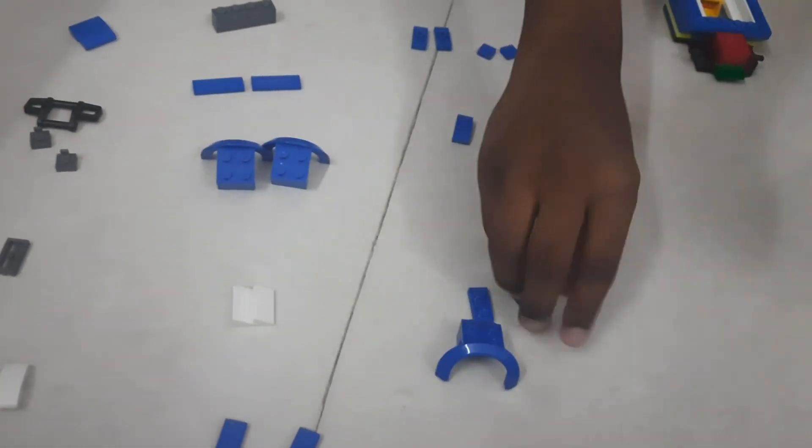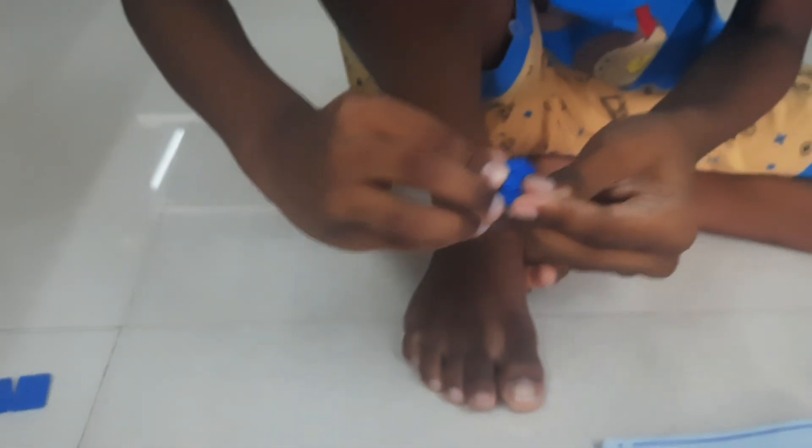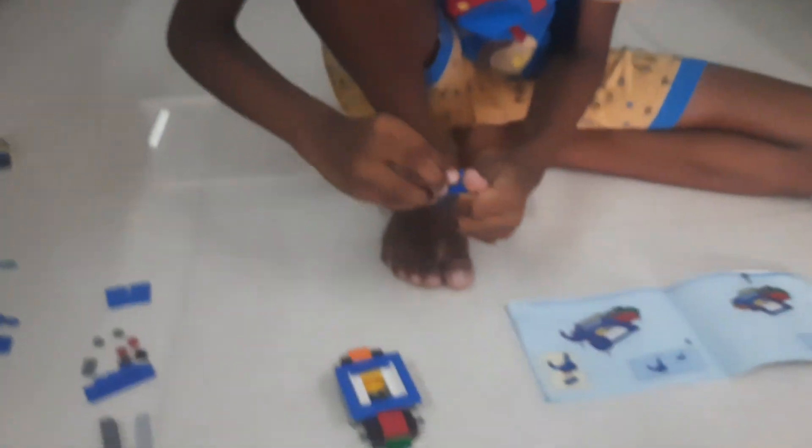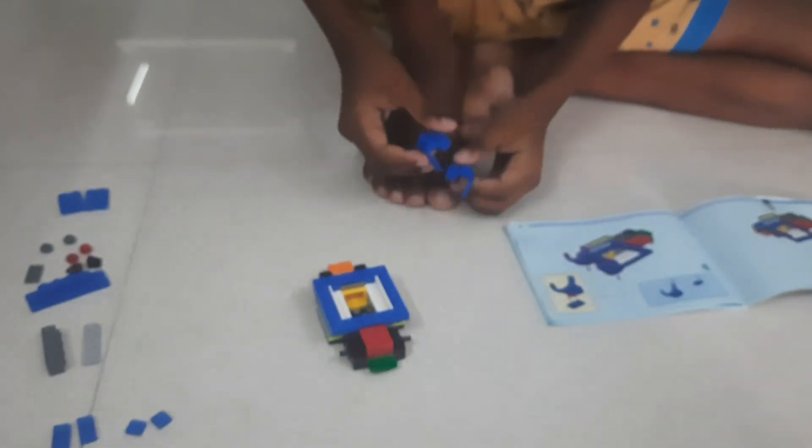We can come back to our manuals. The step number is eight. We need these two pieces. Now we need to connect all of this. Like that. Next piece. I got a little confused again.